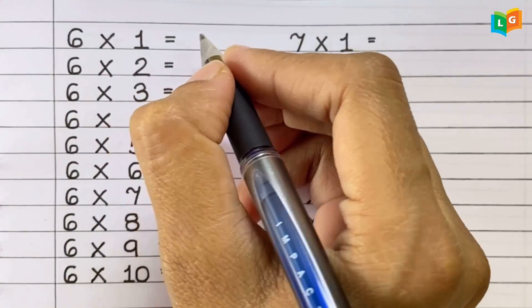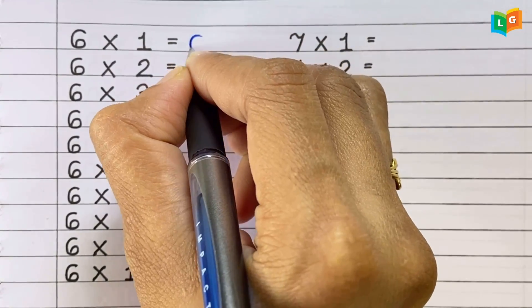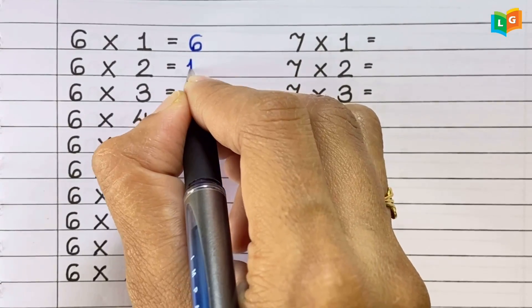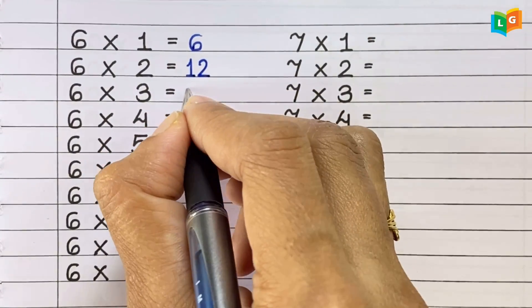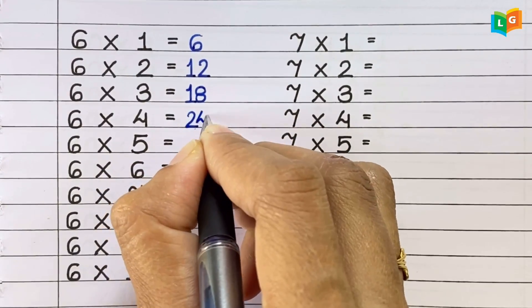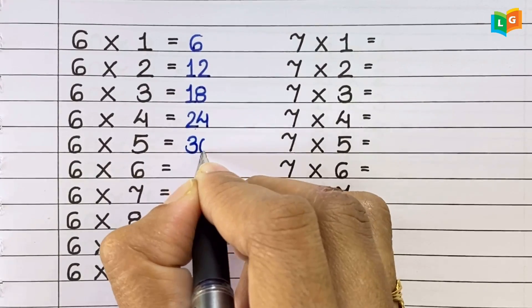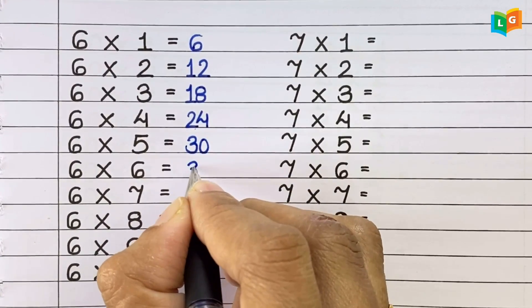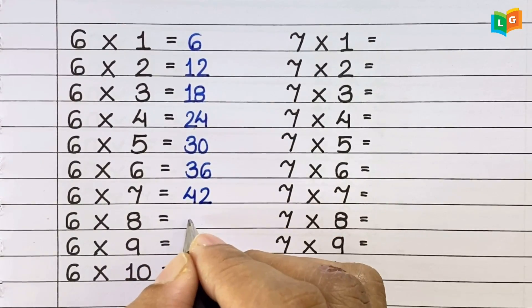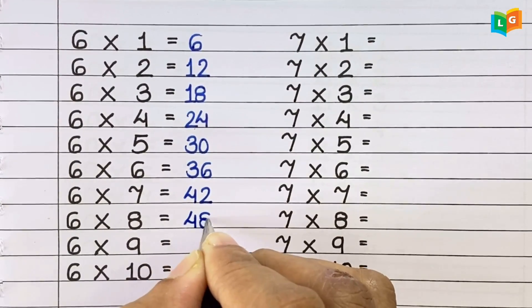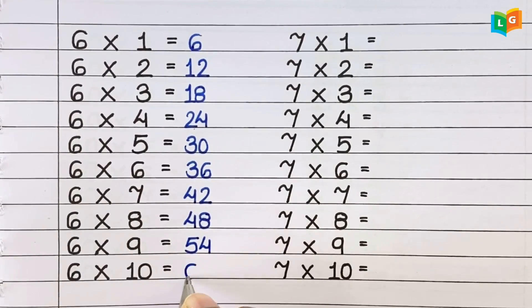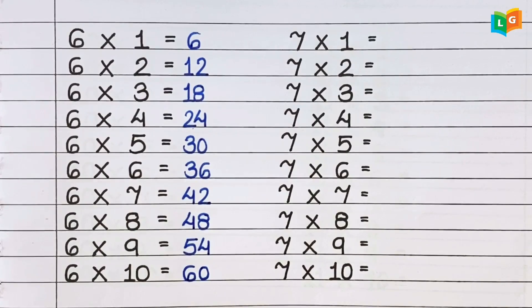Now let's see table of 6. 6 1s are 6, 6 2s are 12, 6 3s are 18, 6 4s are 24, 6 5s are 30, 6 6s are 36, 6 7s are 42, 6 8s are 48, 6 9s are 54, 6 10s are 60.